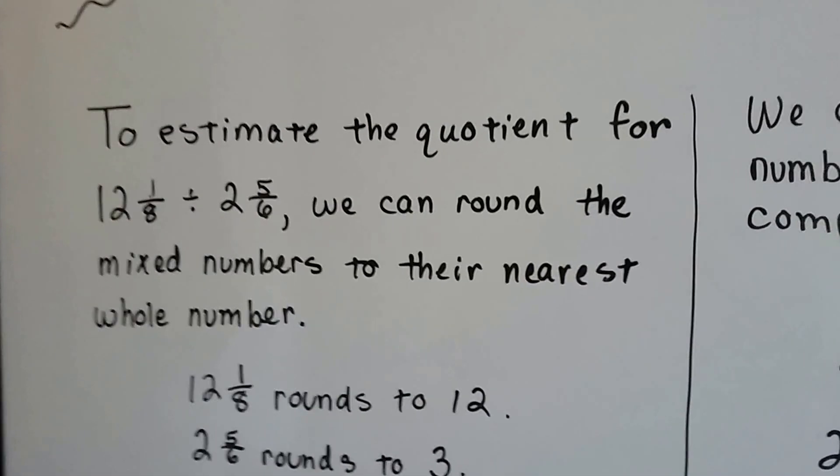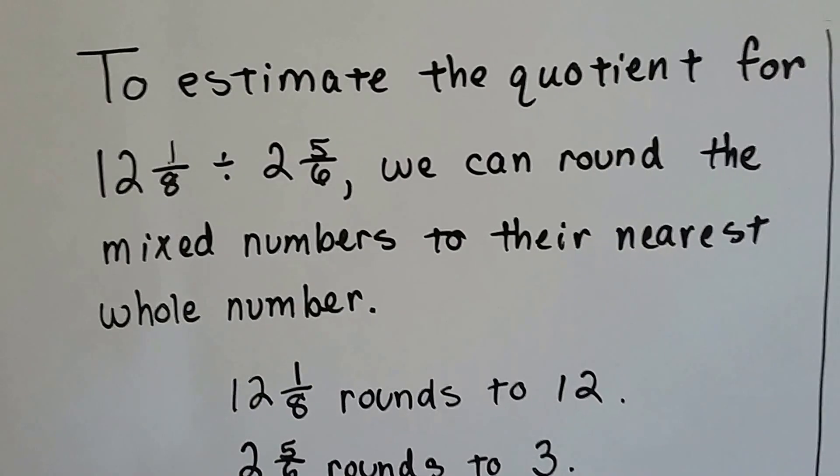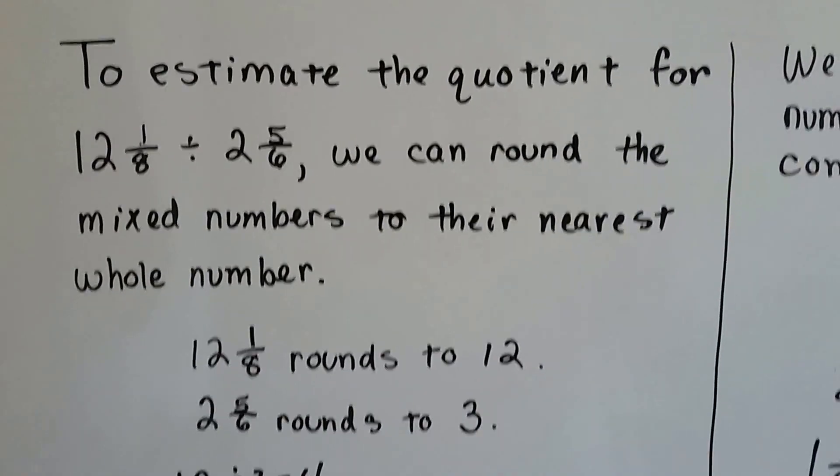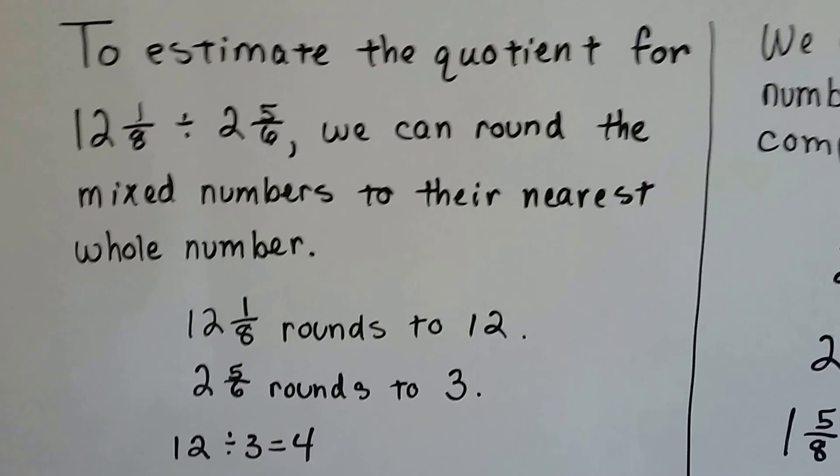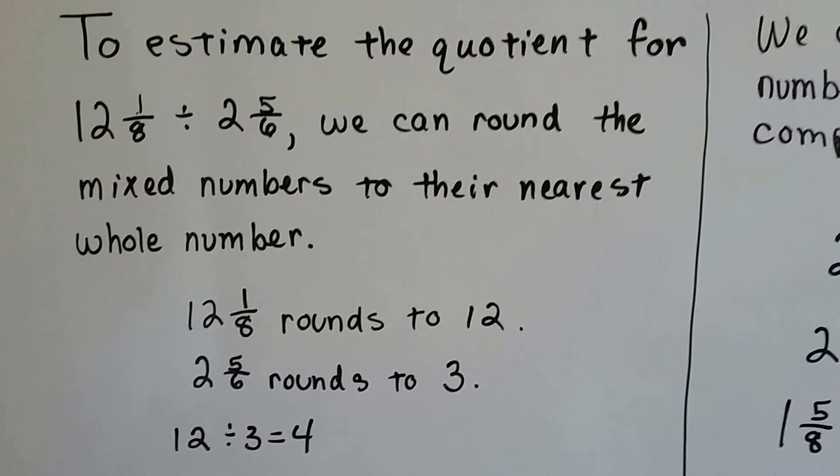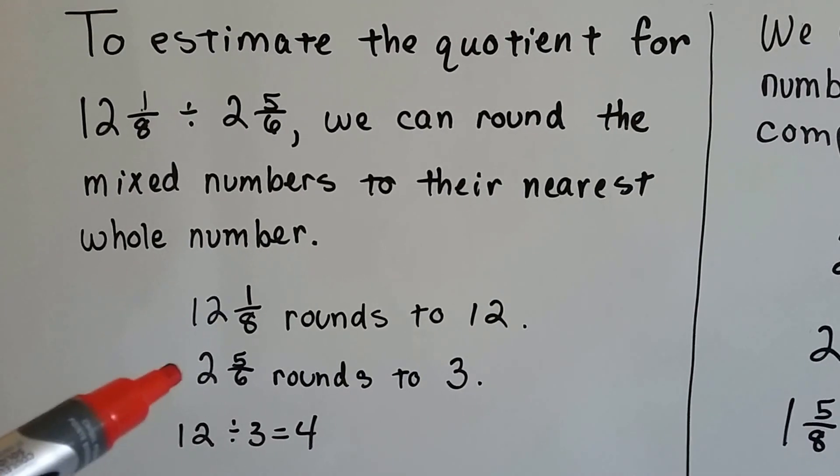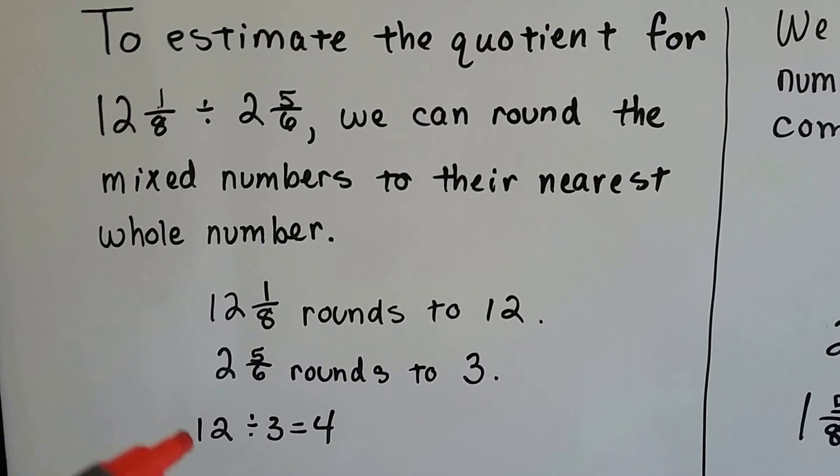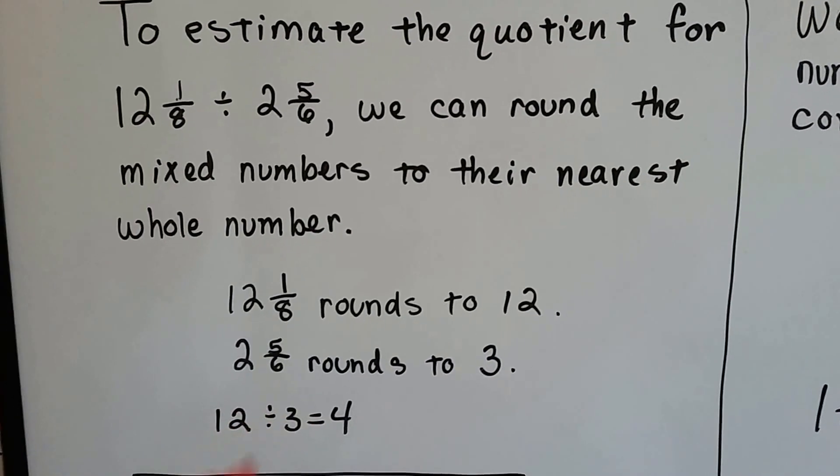To estimate the quotient for twelve and one-eighth divided by two and five-sixths, we can round the mixed numbers to their nearest whole number. Twelve and one-eighth can round to twelve, and two and five-sixths can round to three. Then we can just do twelve divided by three equals four.